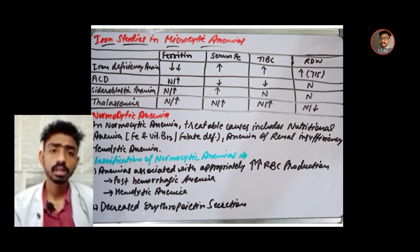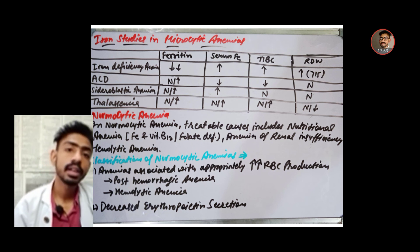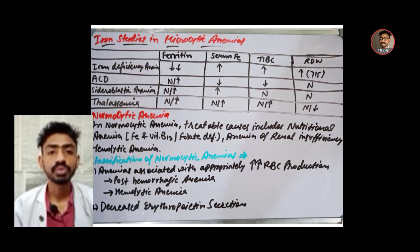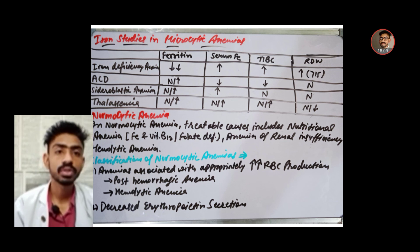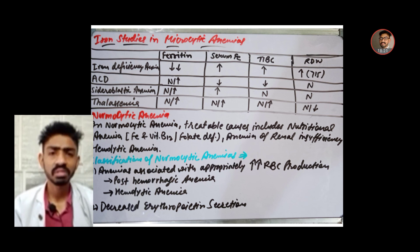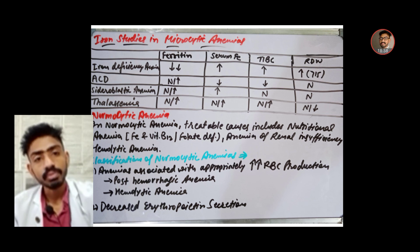A summary of iron studies in the four types of microcytic anemia: in iron deficiency anemia, ferritin decreases, serum iron decreases, TIBC increases, and RDW increases above 15. In anemia of chronic disorder, ferritin is normal or increased, serum iron is low, and TIBC decreases. In thalassemia, ferritin, serum iron, and TIBC are all normal or increased, but RDW is decreased or normal.